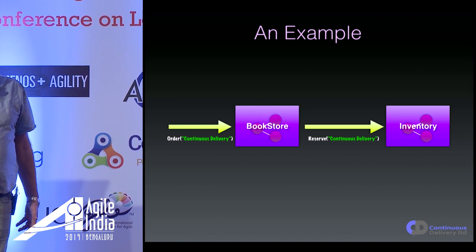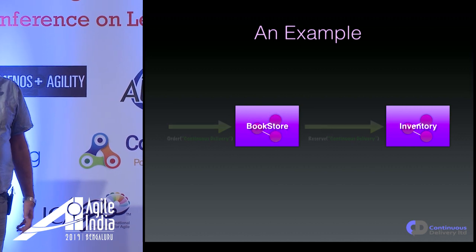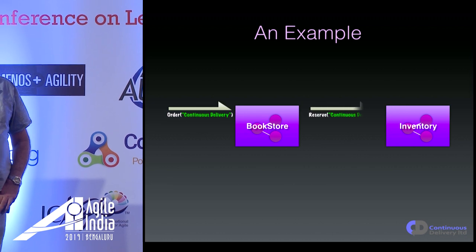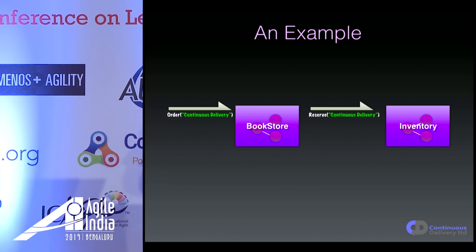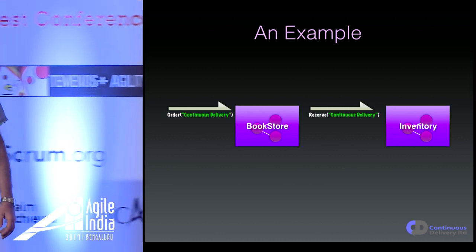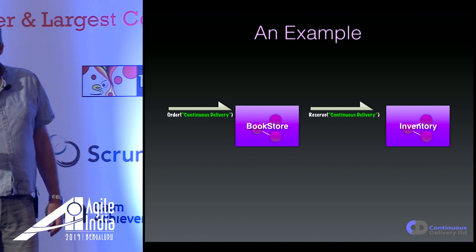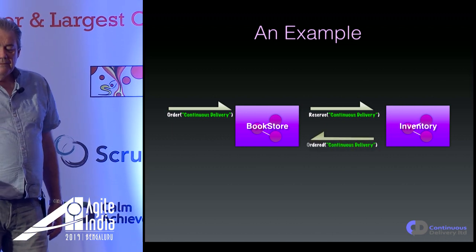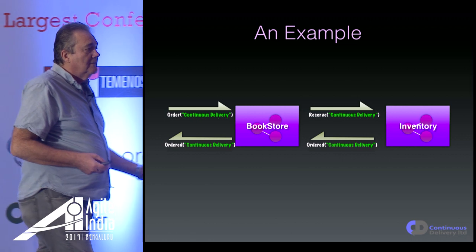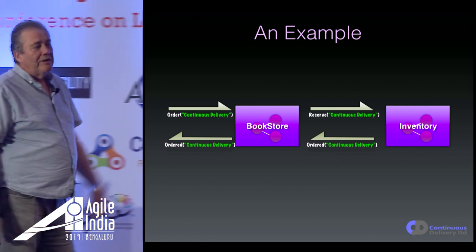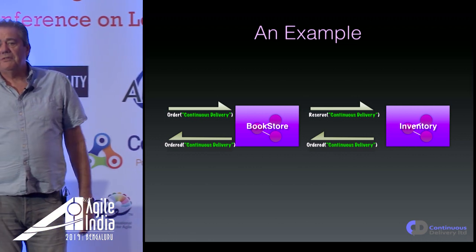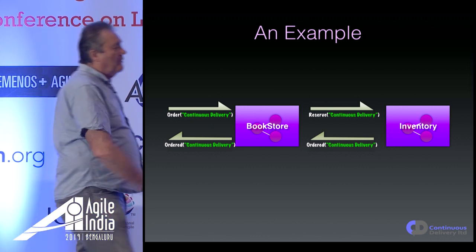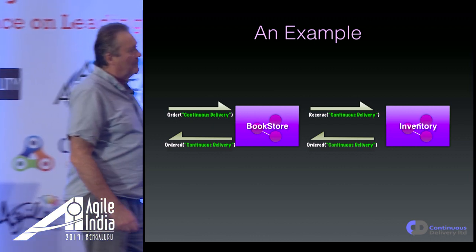What we could do instead is use an asynchronous model. Here's a message coming in ordering Continuous Delivery. That's going to send a message on to reserve the book in inventory. And sometime later — maybe a microsecond, maybe months — there's going to be a response that comes back, and we can communicate that response back upstream.